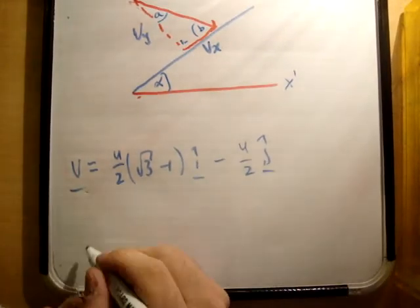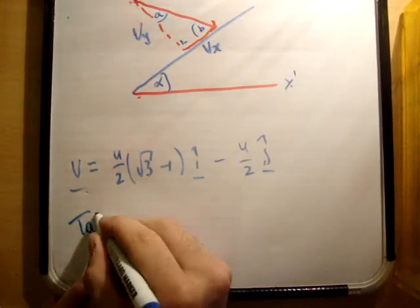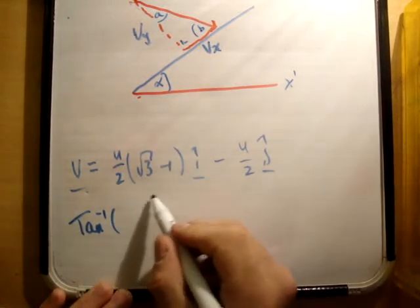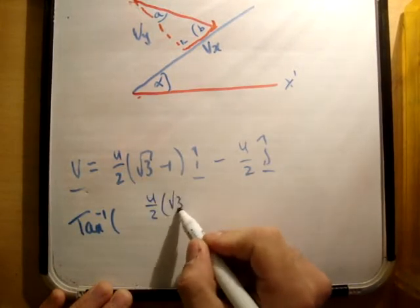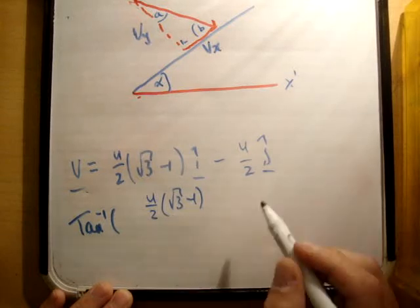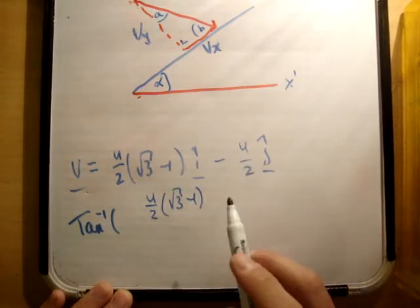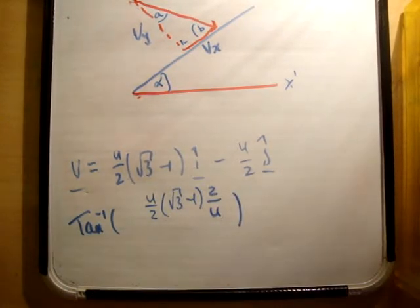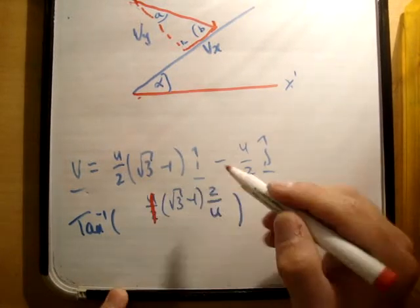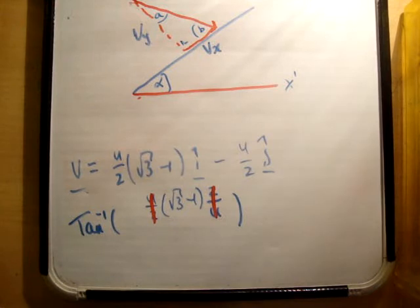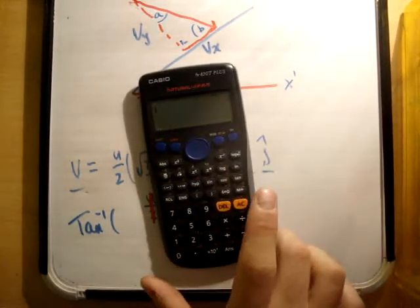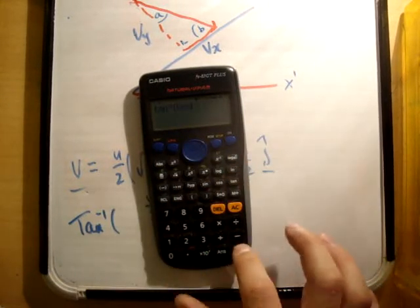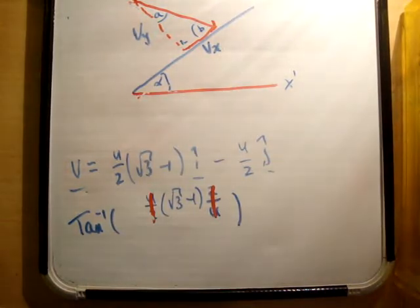So let's just do that. So tan inverse, so we need tan inverse opposite over adjacent. So it's v sub x, which is u over 2 times root 3 minus 1, over u over 2. So turn it upside down and multiply, like that. Just be careful with your algebra, and it'll be just fine. Those two cancel, of course. And we get inverse tan root 3 minus 1, so pull out the calculator. The square root of 3 minus 1, inverse tan with that, get an answer of 36.2 degrees. So we have that a is equal to 36 degrees.